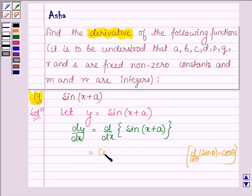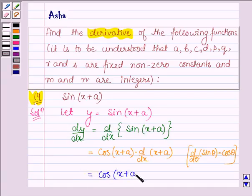So here we have cos X plus A times the derivative of X plus A. This is further equal to cos X plus A times, derivative of X is 1 and derivative of A with respect to X is 0, since A is a constant.